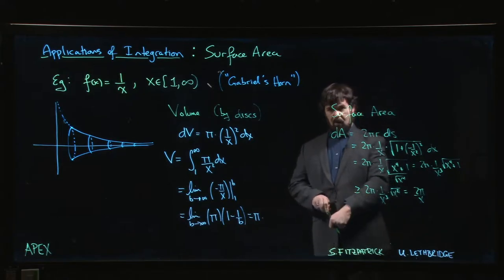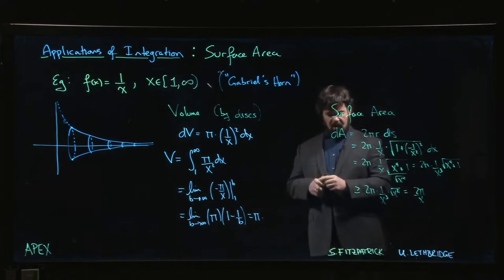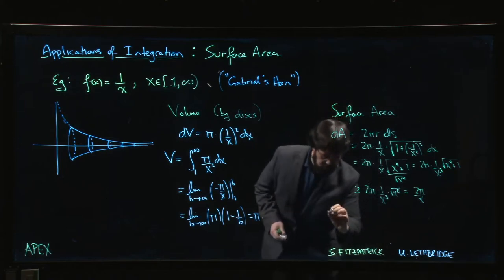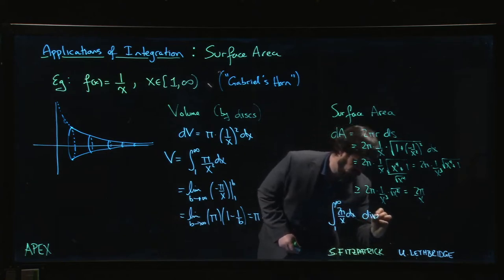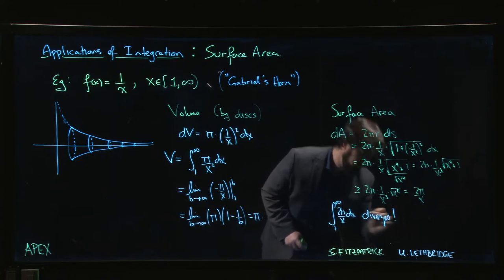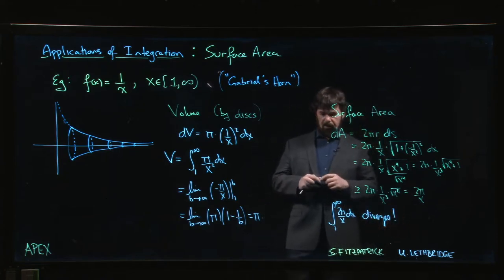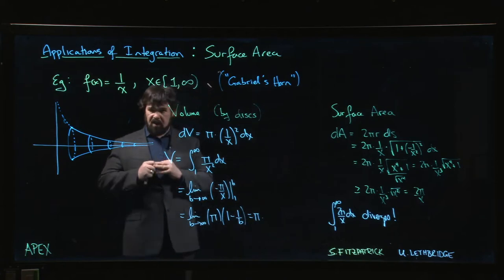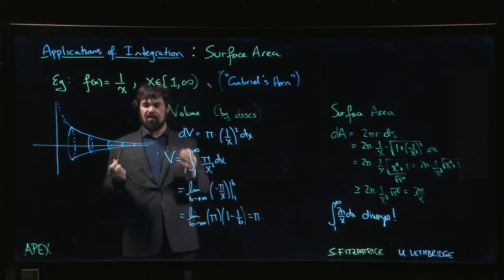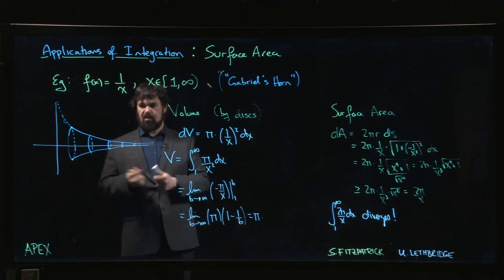Well, now we're in trouble because we know that the integral of 2π over x from 1 to infinity, we know that diverges. So this is bizarre. You have something which has a finite volume but it has an infinite surface area. How can that even be possible? It doesn't make a lot of sense.